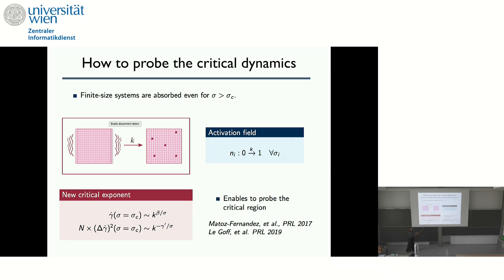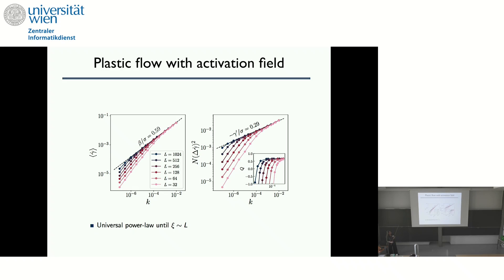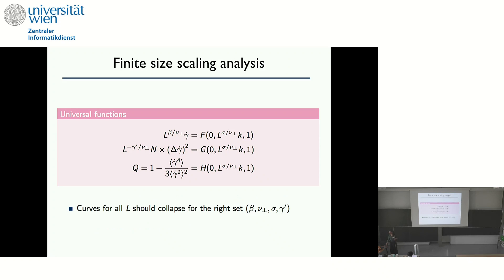And then you can study the critical dynamics at the critical point delta sigma. So the distance to the yield stress is zero and vary only k. This is what we did. And so here you see the response of the rate as a function of k. And you see that you have strong finite size effects, but that's not a problem because you can do a finite size scaling analysis in that case. And I won't go into the detail of how this works. If somebody wants to know, I can explain.